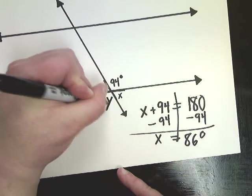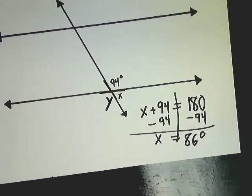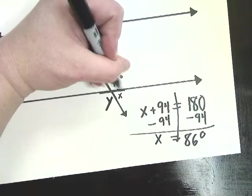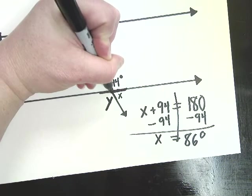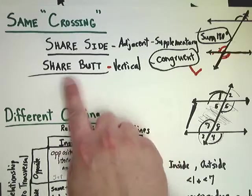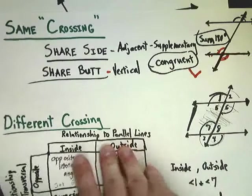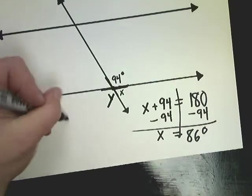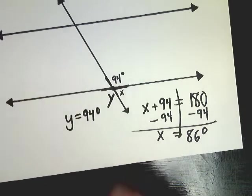Now, if x had been over here, so let's say y is over on this side, they're still in the same crossing, but instead of sharing a side, they don't share a side anymore. Because they've got this. The only thing they share is this single point, or the butt. So they share a butt. They're vertical, which means they're congruent. So the value of y is 94 degrees.